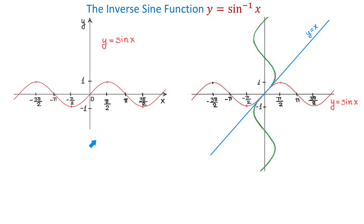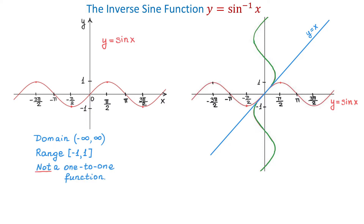Here we have the graph of the trigonometric function y equals sine of x. The domain of this function is the interval from negative infinity to positive infinity, and the range is the interval from negative 1 to positive 1 inclusive. On this interval, this function is not a one-to-one function because it does not pass the horizontal line test.